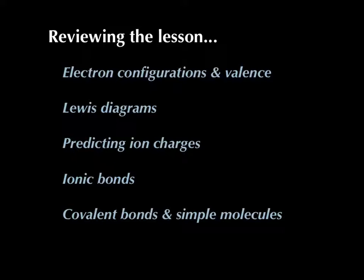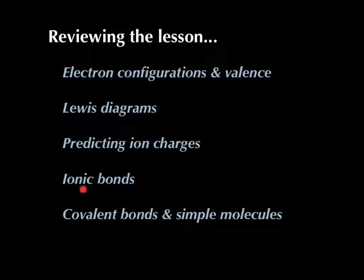I don't expect you to be really great at drawing molecules yet — we'll spend more time on that. To review: we looked at electron configurations and valence electrons, used those to draw Lewis dot diagrams, used Lewis diagrams to figure out ion charges and whether atoms become cations or anions, drew ionic bonds with square brackets and charges, and finally drew covalent bonds with bond lines and lone pair dots. See you in class next time.